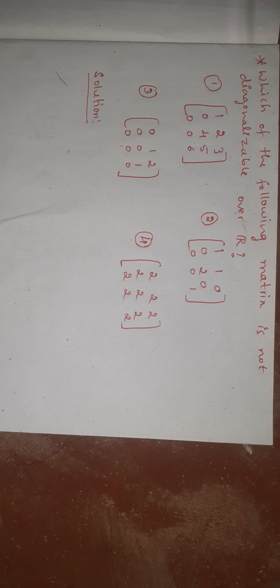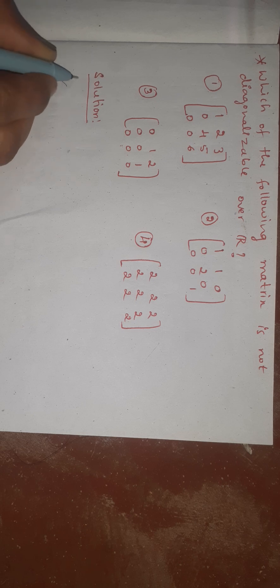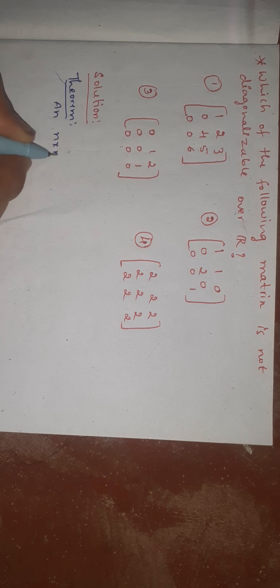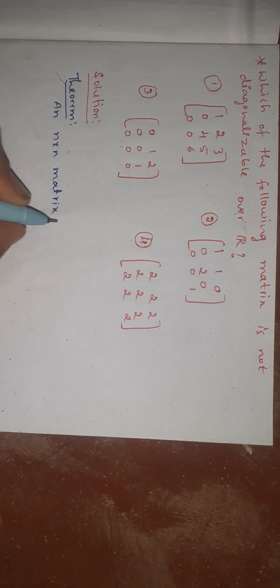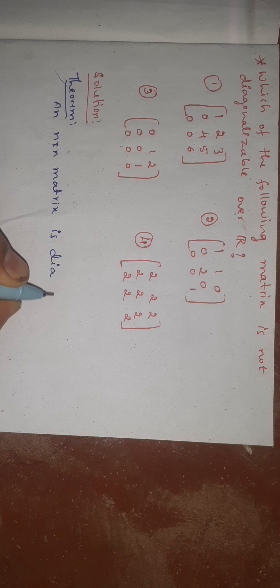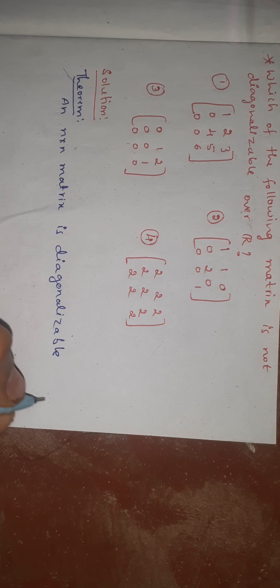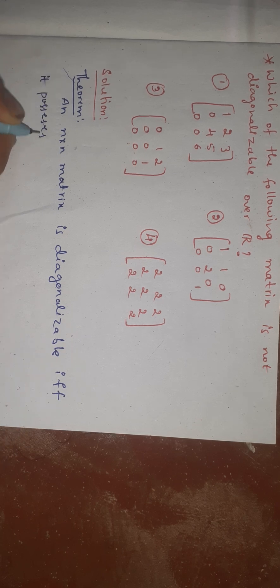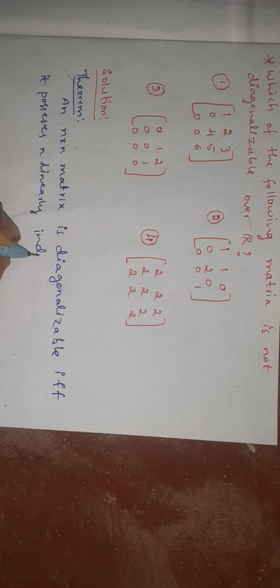How can we check whether a matrix is diagonalizable or not? We have a theorem for that. According to the theorem, an N×N matrix is diagonalizable if and only if it possesses N linearly independent eigenvectors.